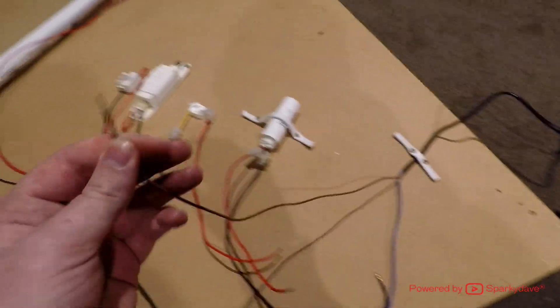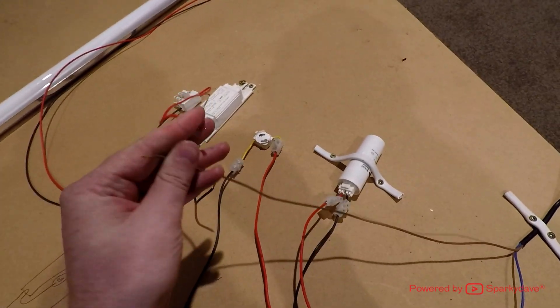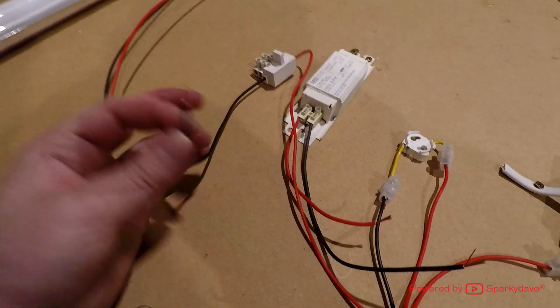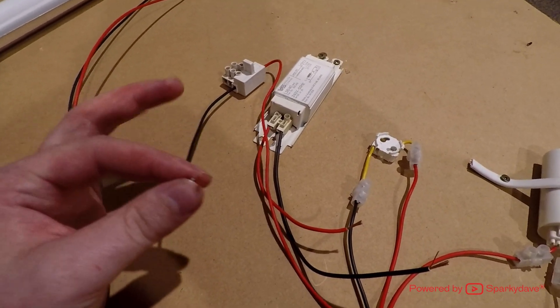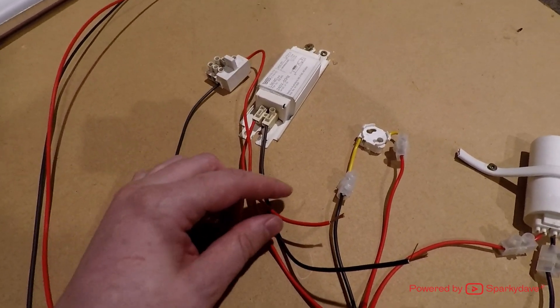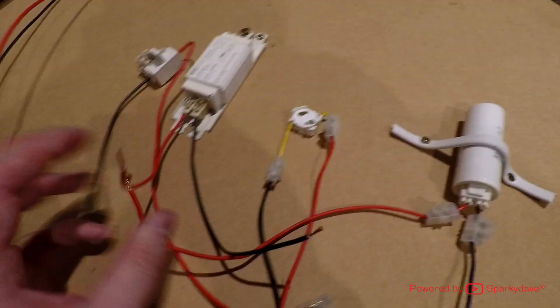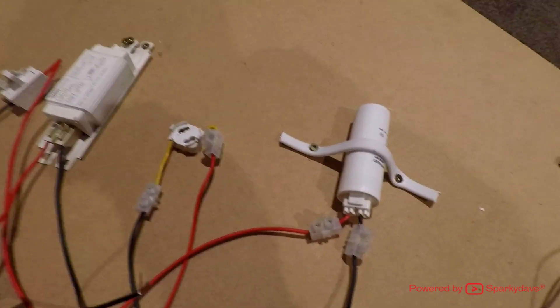This brown cable of the incoming phase will go straight into the red cable of the fuse. Coming out of the black side of the fuse I'm going to tie in the red side of the ballast and the red side of the capacitor together in a connector.